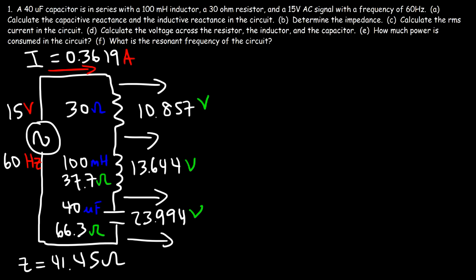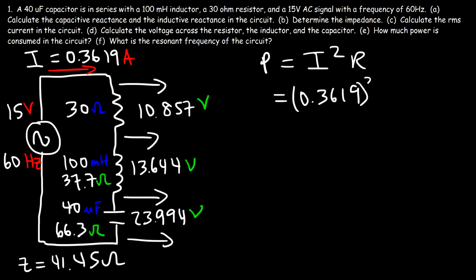Part E: how much power is consumed in the circuit? Only the resistor consumes energy — the capacitor and inductor absorb energy but give it back to the circuit. The power absorbed by the resistor is I squared times R: 0.3619 squared times 30 ohms, which gives 3.929 watts.